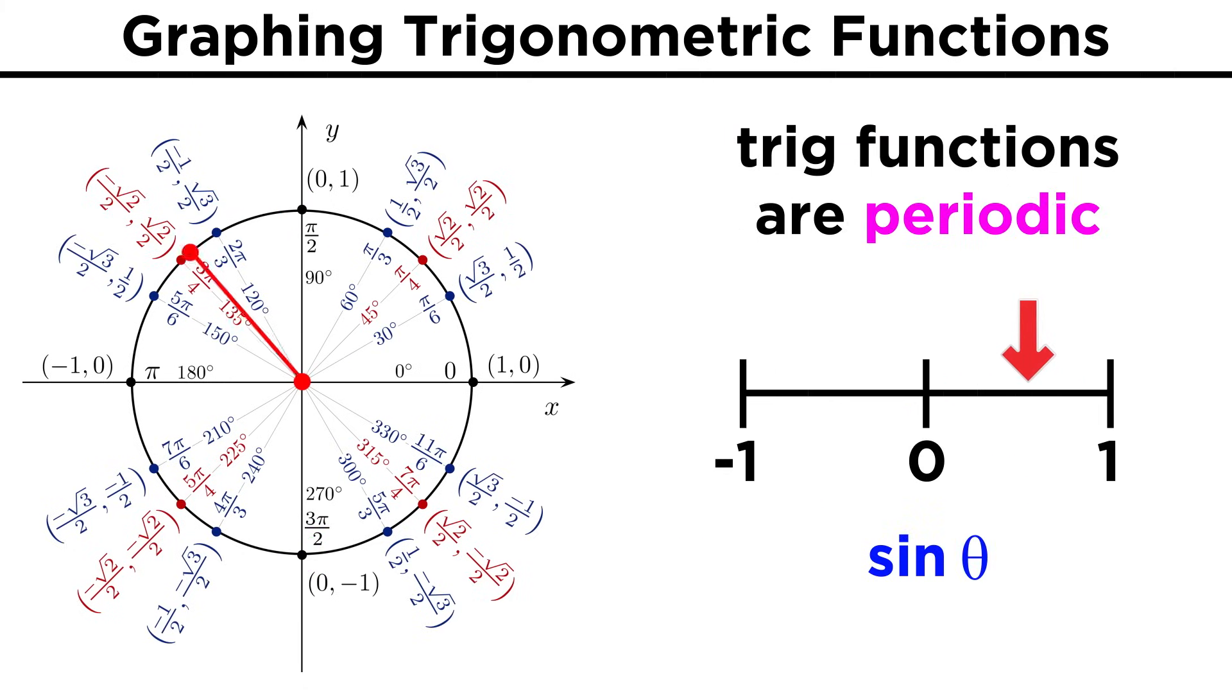The other thing we want to understand about these trig functions is that they are periodic. Their values repeat over and over again as we go through each period of the function. The period of these functions is two pi radians, because after two pi radians, we are back to where we started, and all the values repeat. In other words, the sine of x plus two pi is the same as the sine of x. The same goes for cosine.